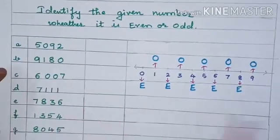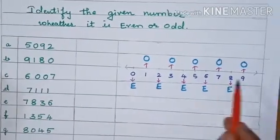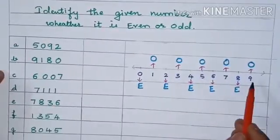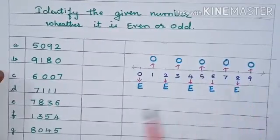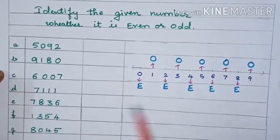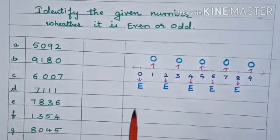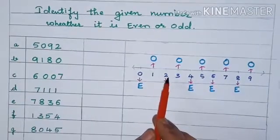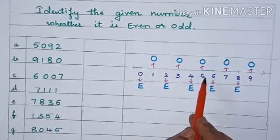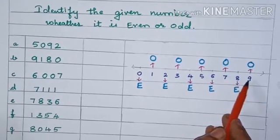Now, see children, here I have taken a number line from 0 to 9. By using this number line, we can also find out whether a number is even or odd. You can see here in this number line: 0, 1, 2, 3, 4, 5, 6, 7, 8, 9.